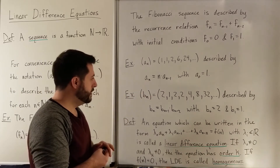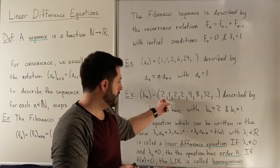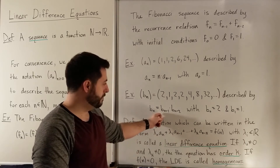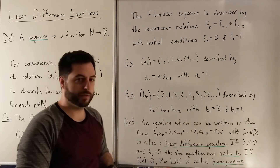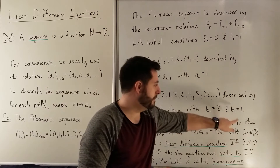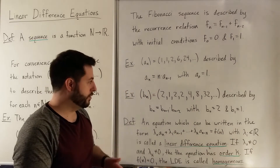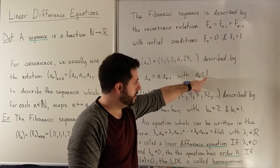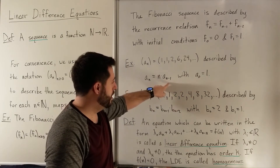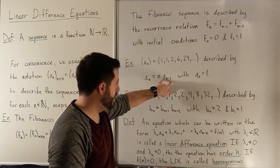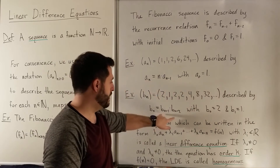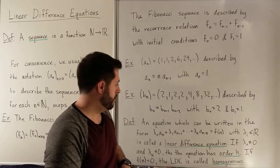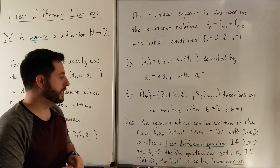Similarly, we have another sequence described by this recurrence relation, in which to get the next term you multiply the previous two terms. Again, we have to describe the first two terms. Here we only needed to say what the first term was because there's only one term in the equation that allows you to get the next term. Whereas here there are two terms describing the next term, which means we need two initial conditions.